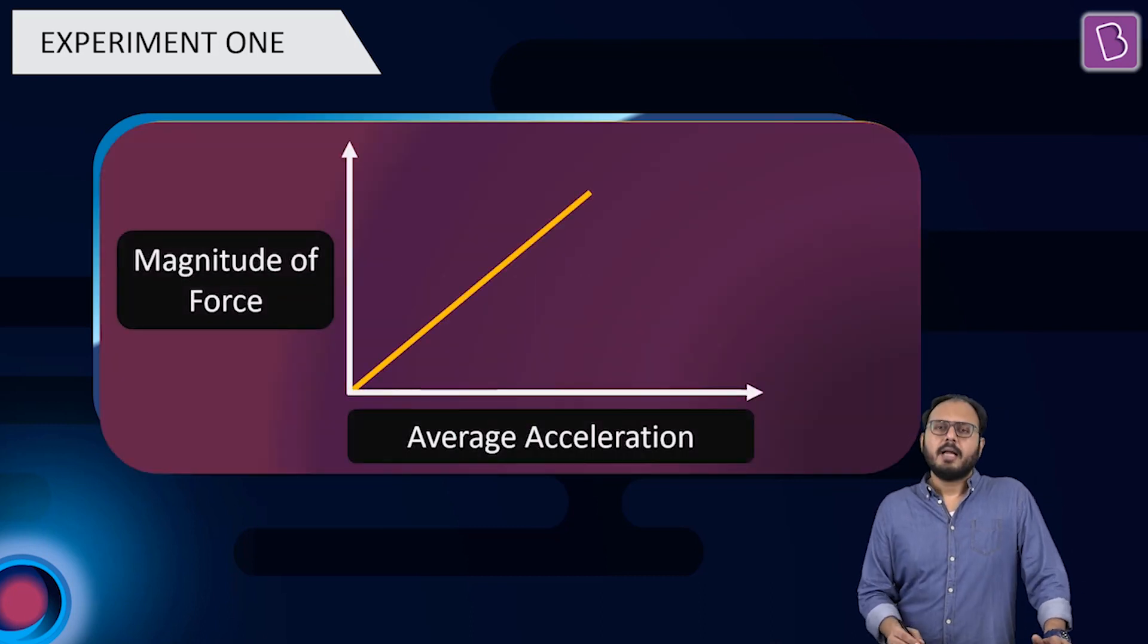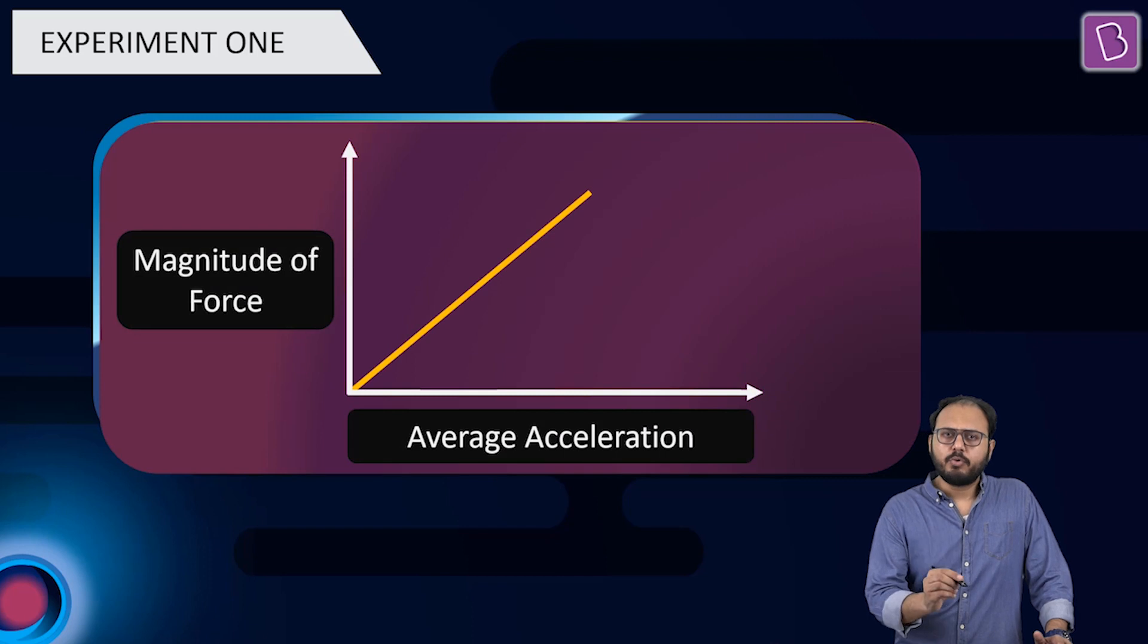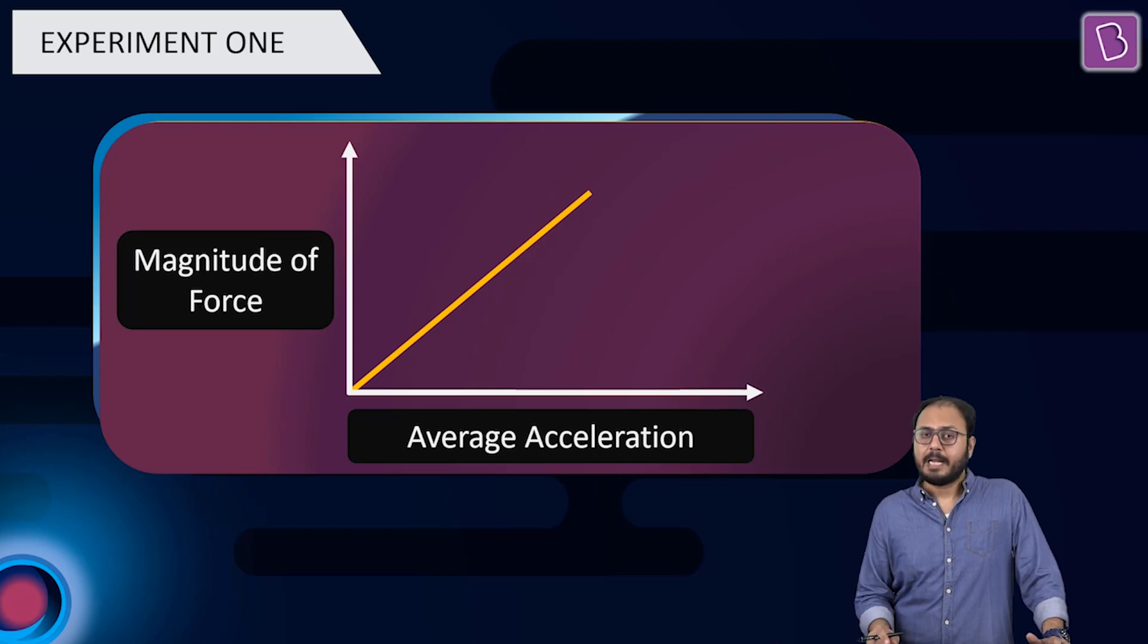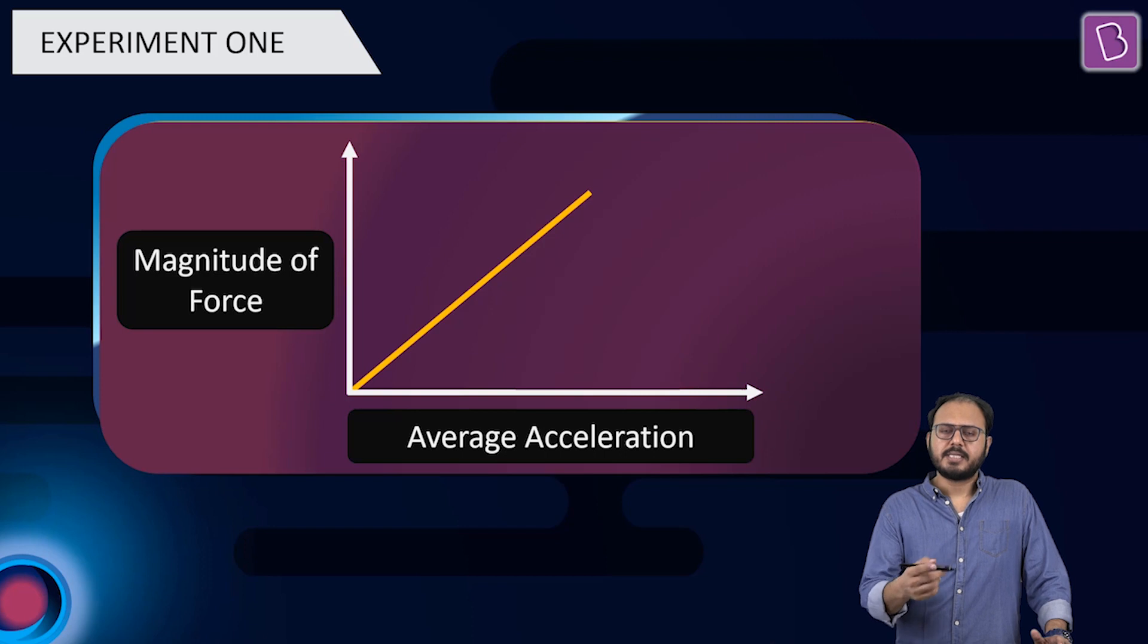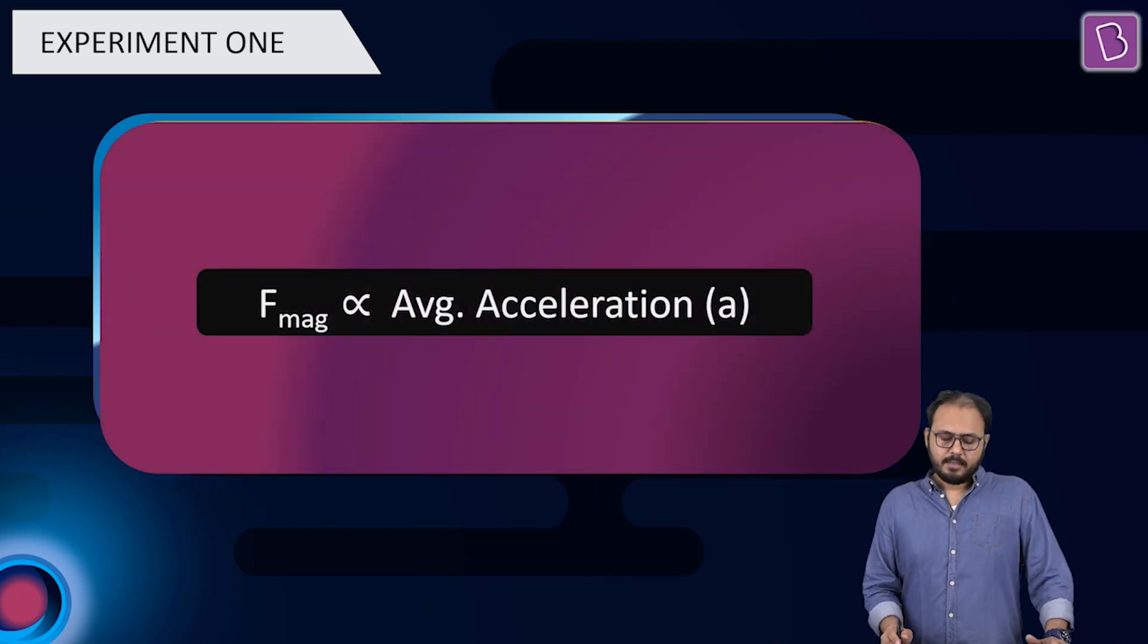When you do that, and you plot the magnitude of the force graph with the average acceleration, Madowa says, the graph becomes linear. That means, if I double the force, average acceleration gets doubled. If I triple the force, average acceleration gets tripled and so on. What is the conclusion? Conclusion is that the magnitude of the force is directly proportional to average acceleration. Absolutely.